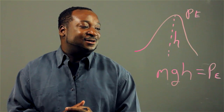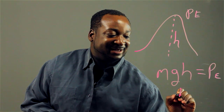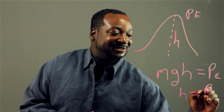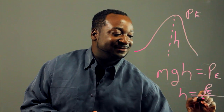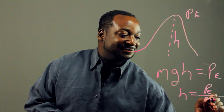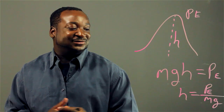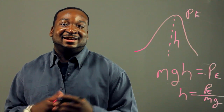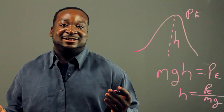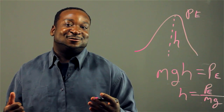And of course, when we solve for H, we get H equals our potential energy divided by the mass times the force of gravity. And this is how you use math in regards to roller coasters.